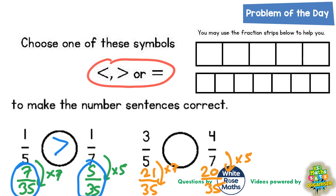So we've got 21/35 being compared to 20/35. Again, in a spelling test, 21 out of 35 would be a bigger score than 20 out of 35.